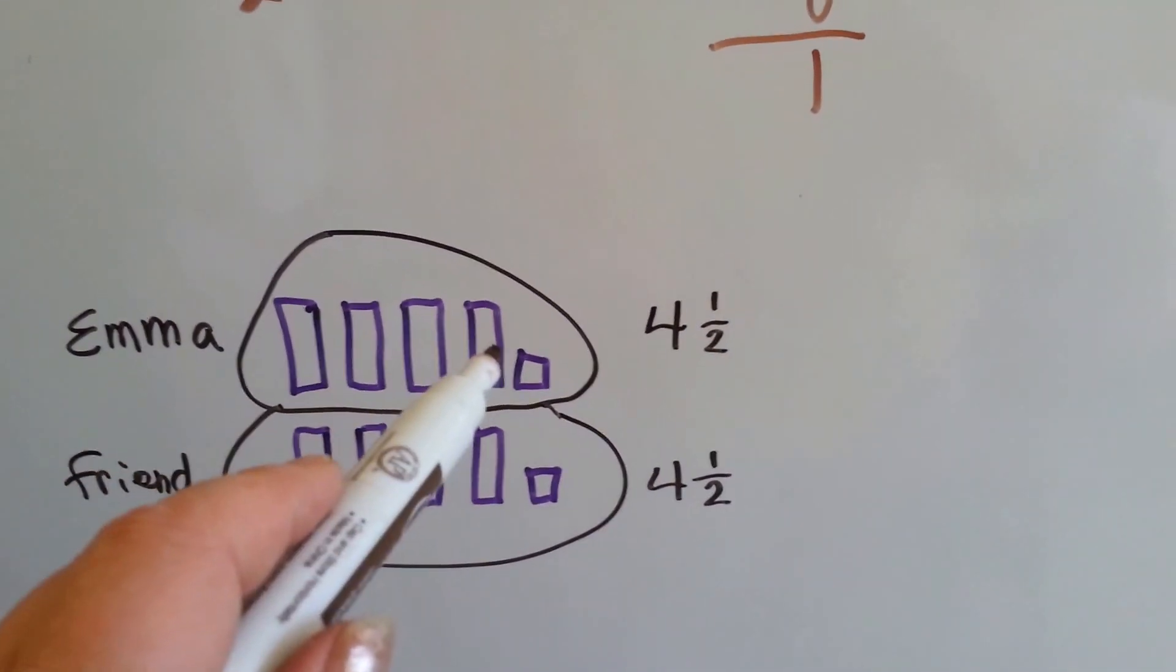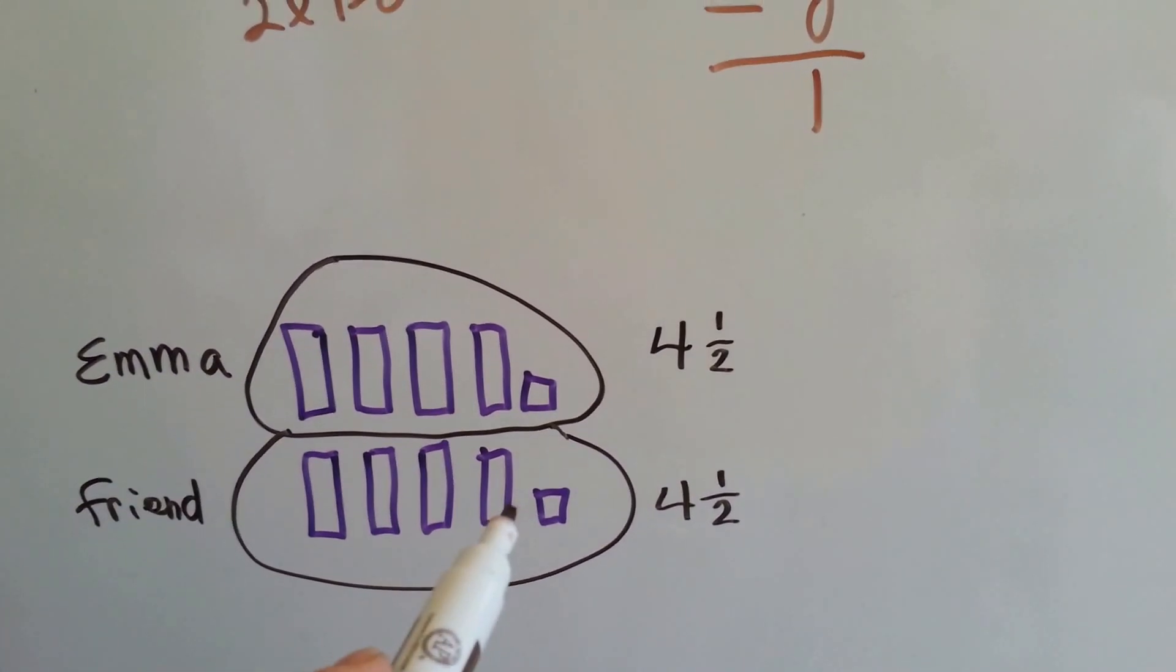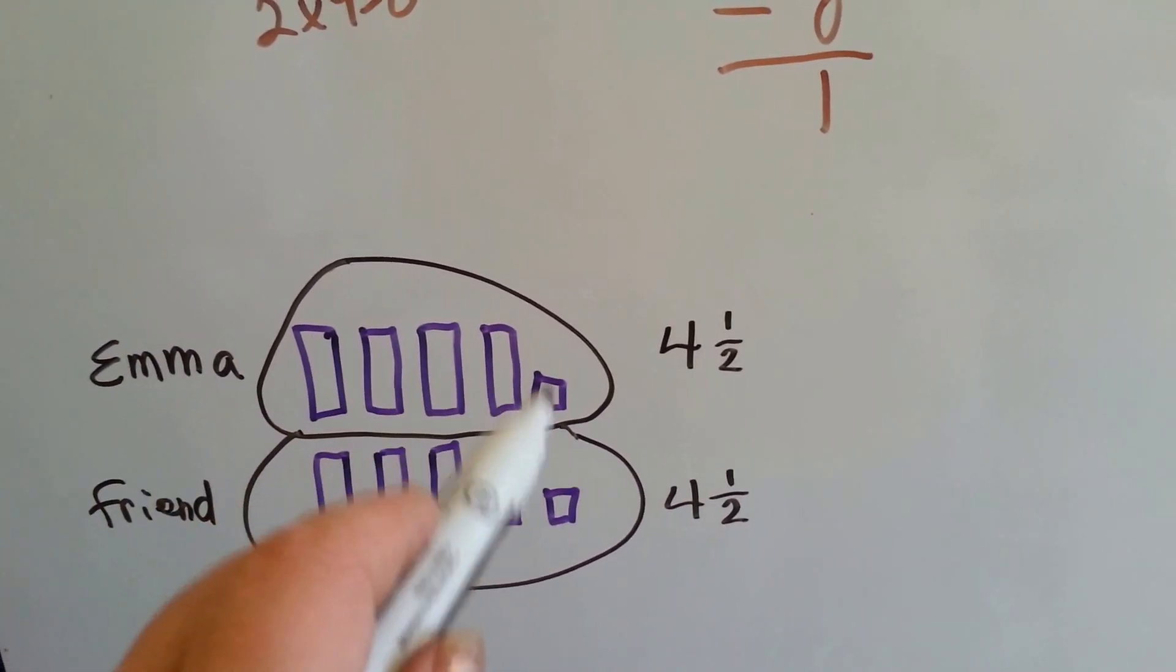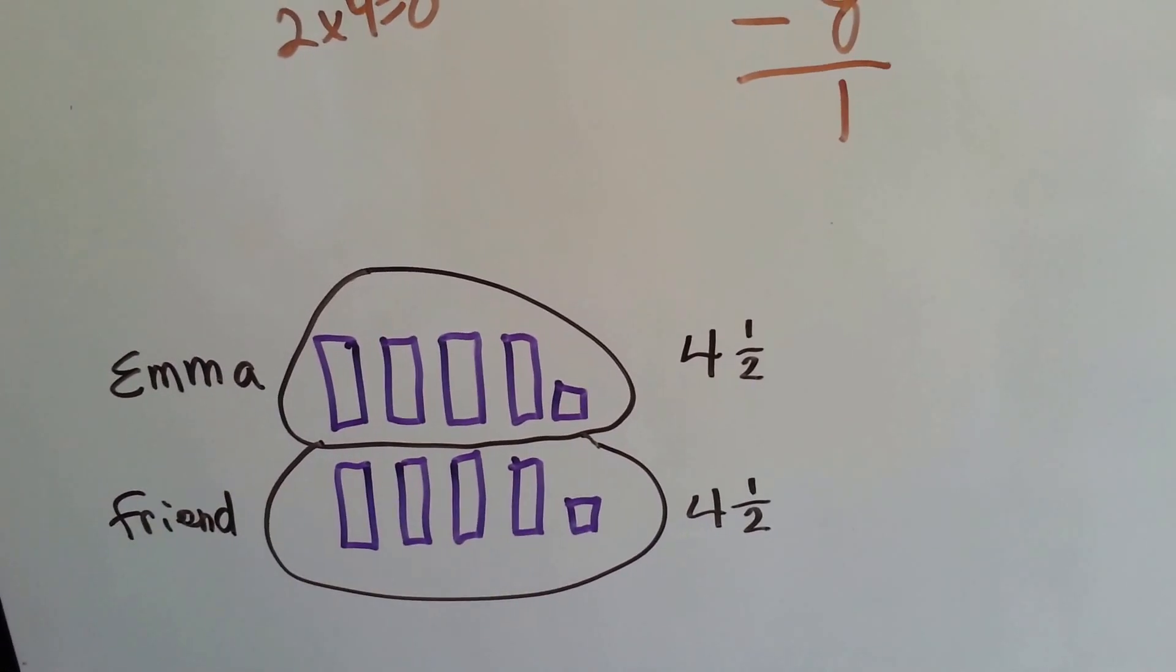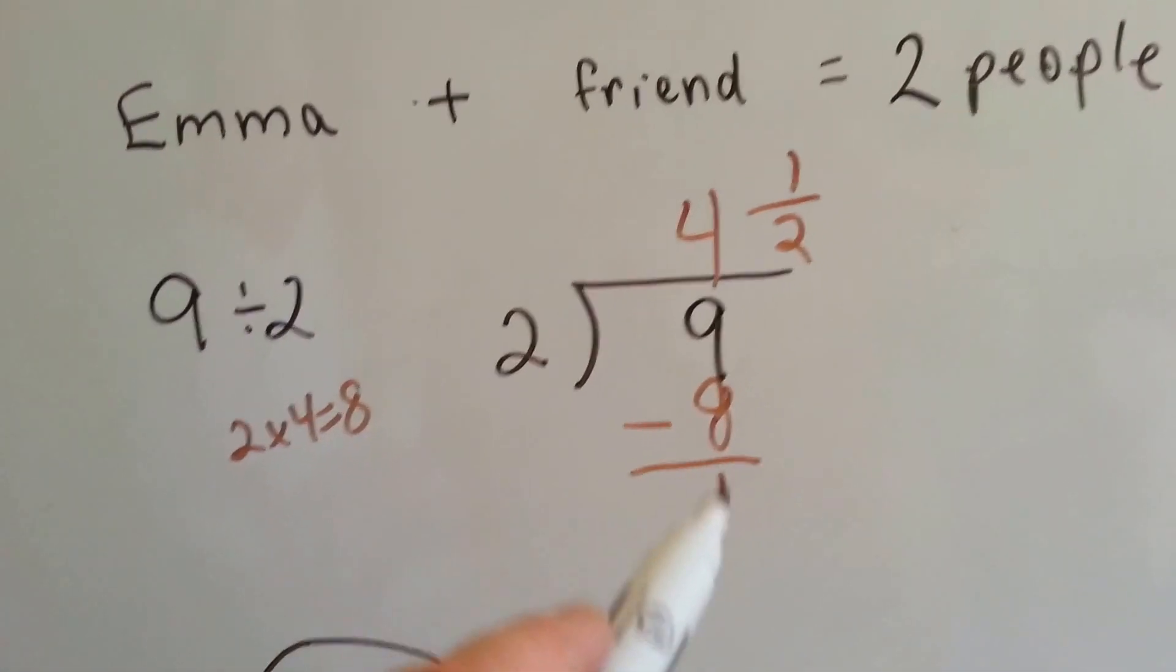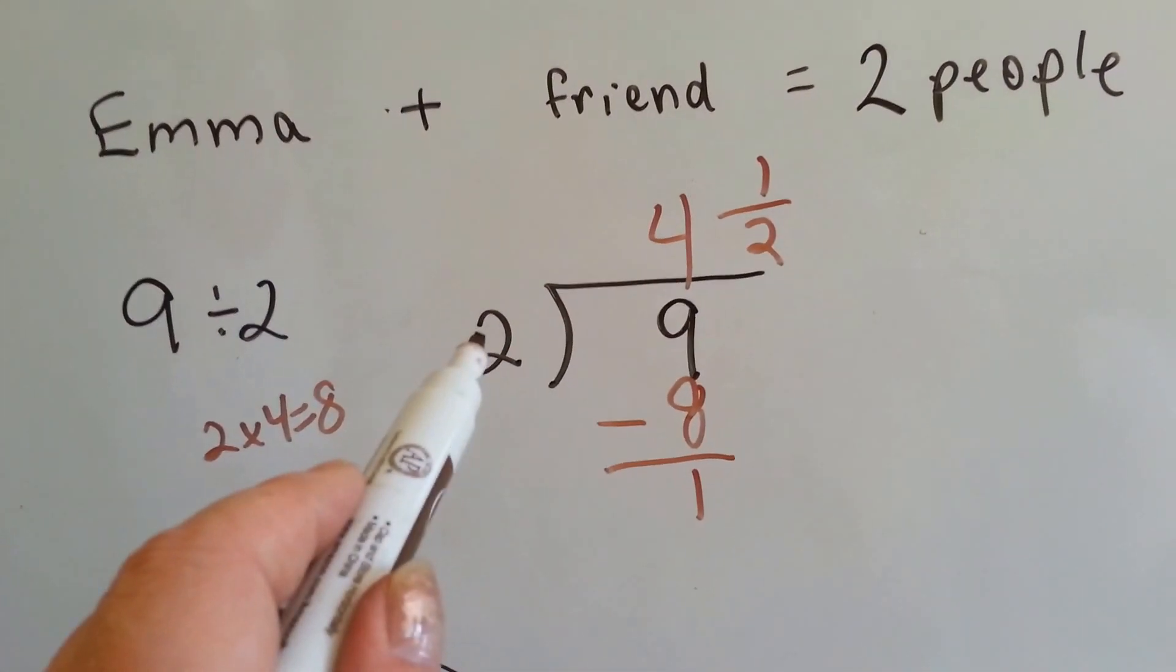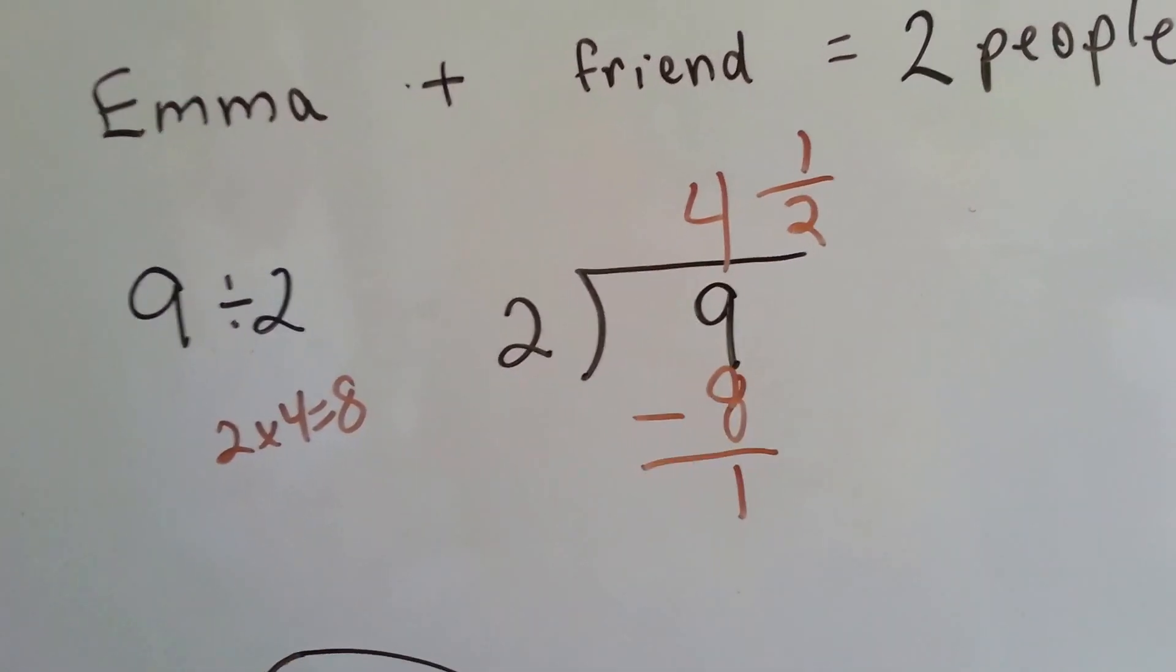Emma gets four and a half candy bars and her friend gets four and a half candy bars. That totals eight and two halves makes the ninth one, see? You put the remainder on top of the divisor to get the fraction.